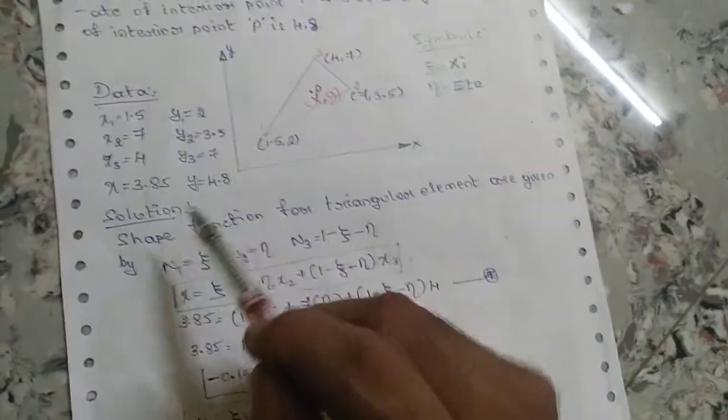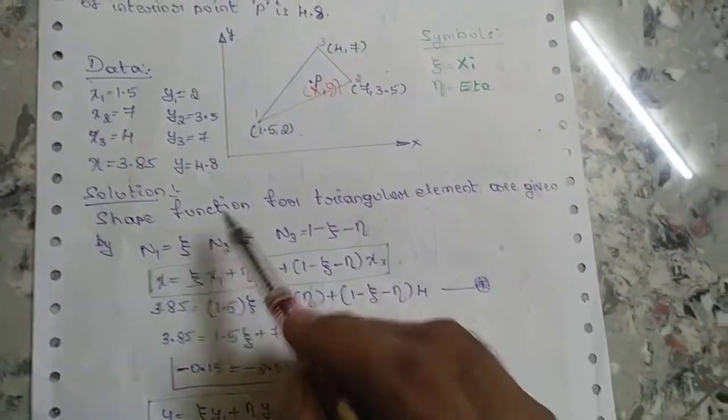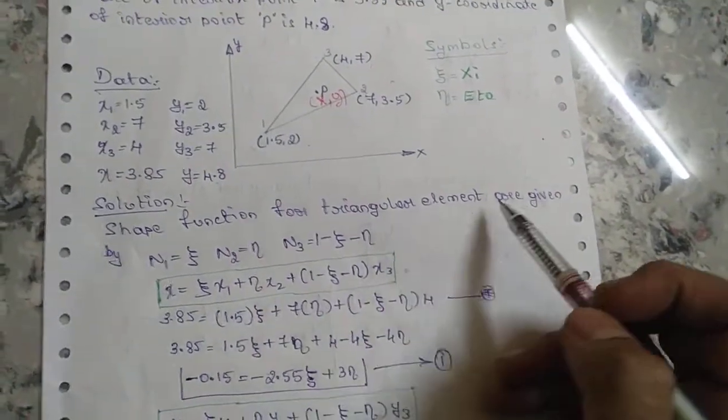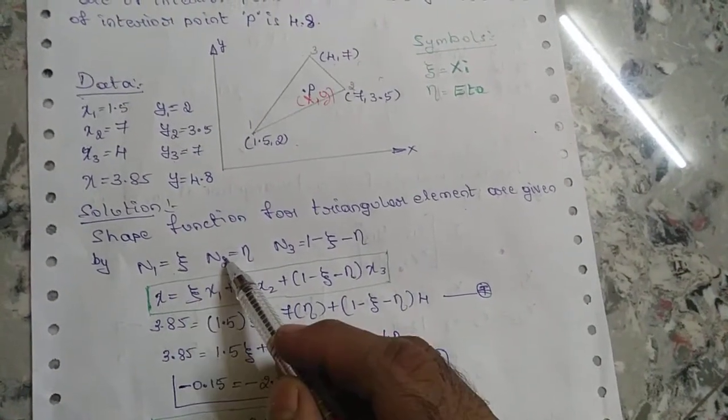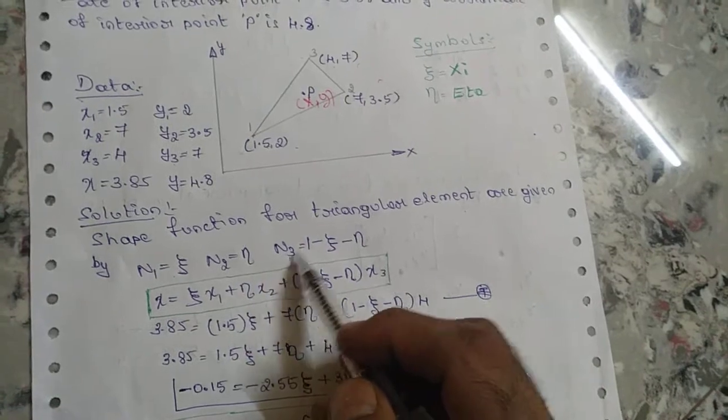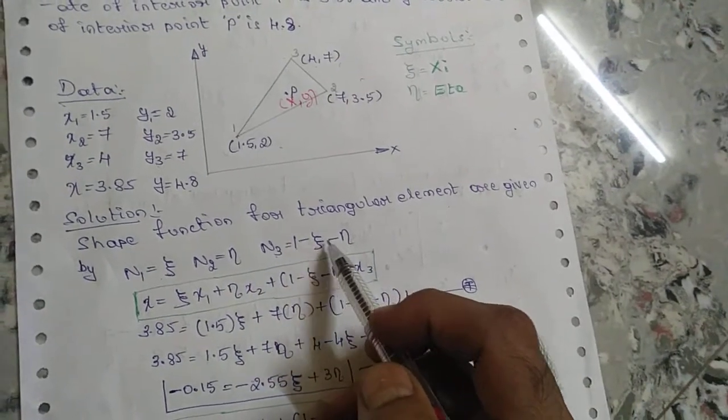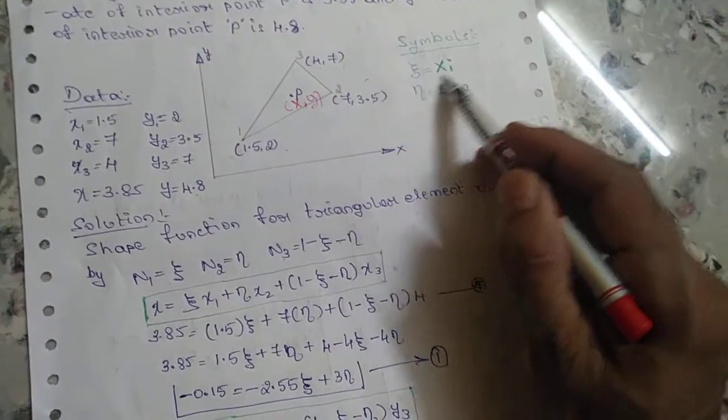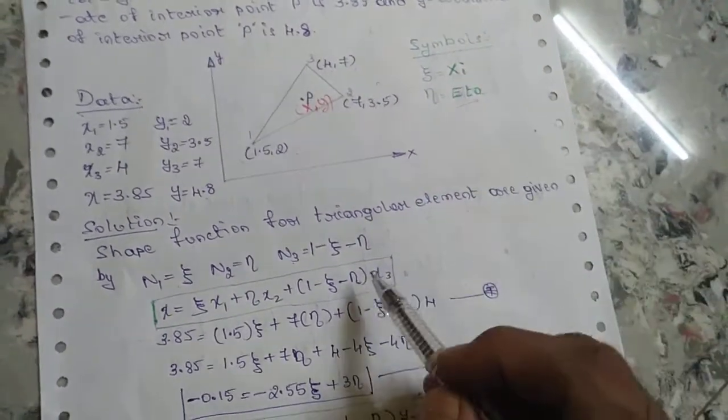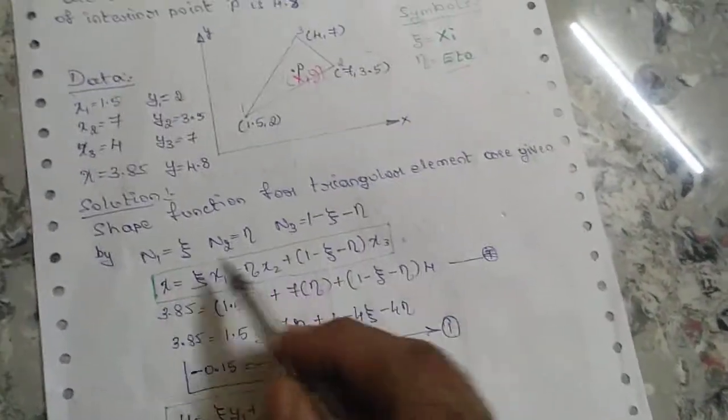The solution: shape functions for triangular element are given by N1 = ξ, N2 = η, N3 = 1 - ξ - η. These symbols ξ and η are part of the derivation.